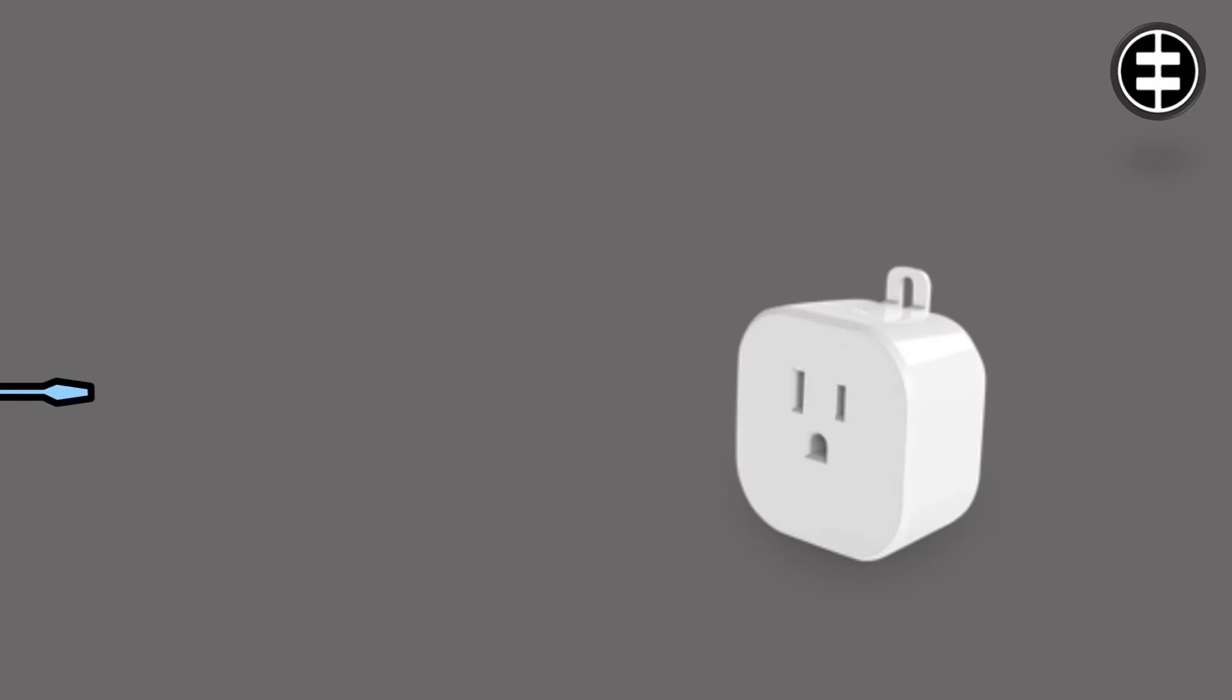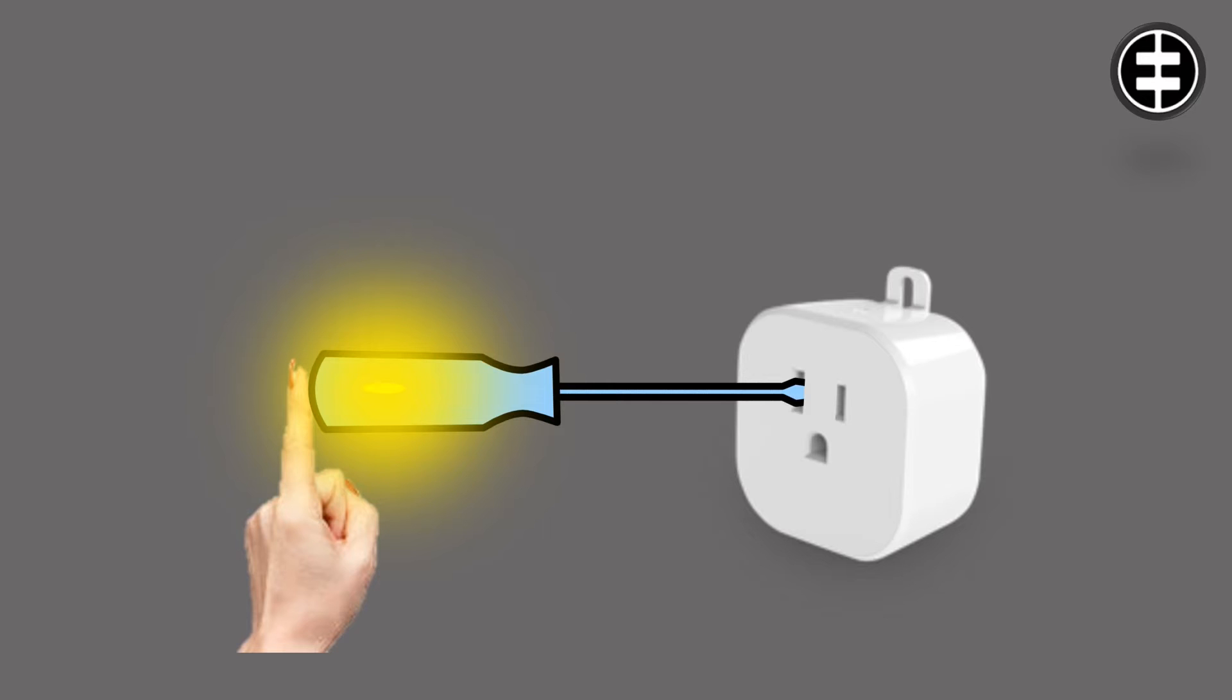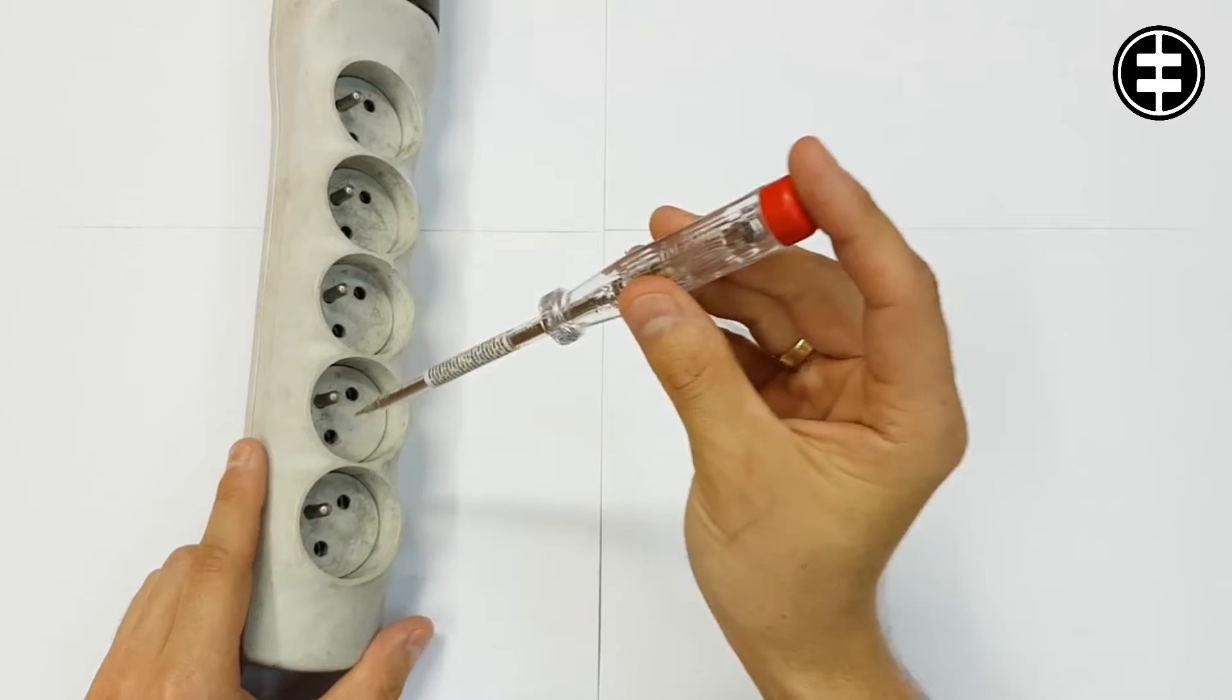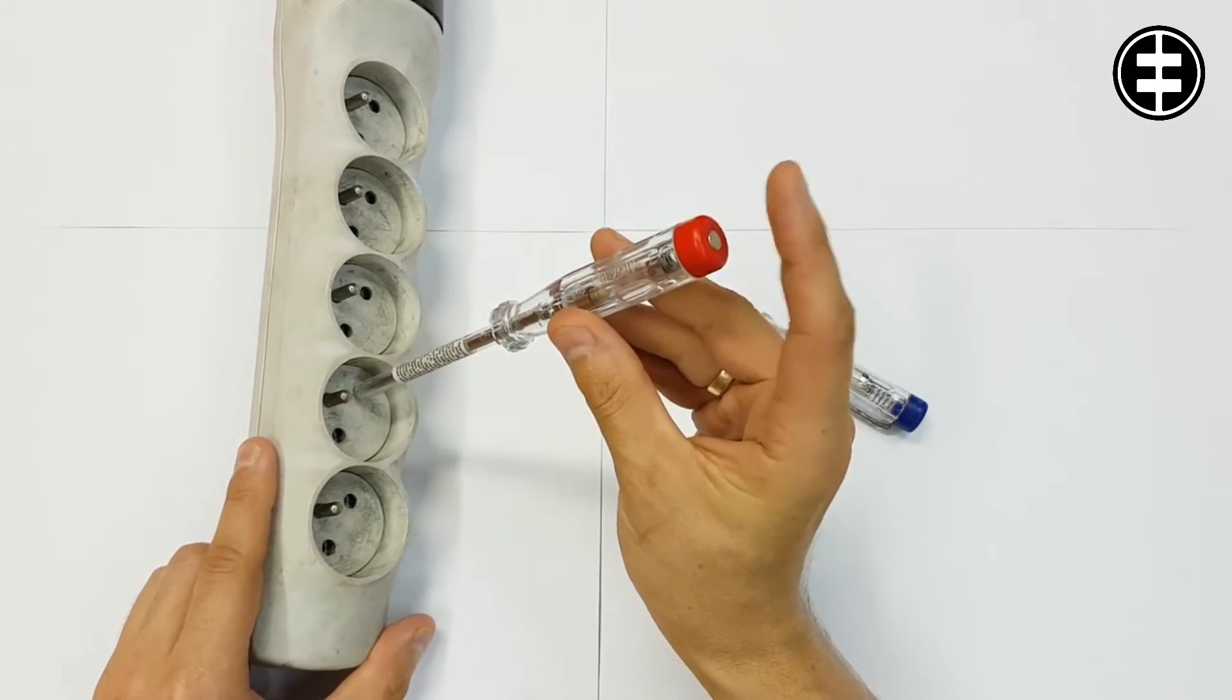But with the tester, it is connected to the line from one side and from the other side my finger. And even though I wore insulated shoes, the lamp lights up.